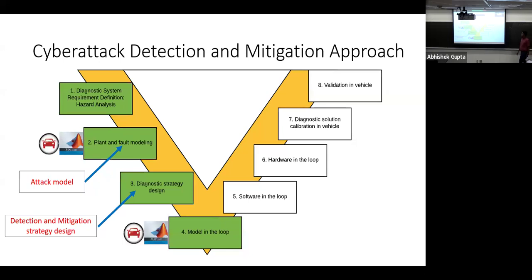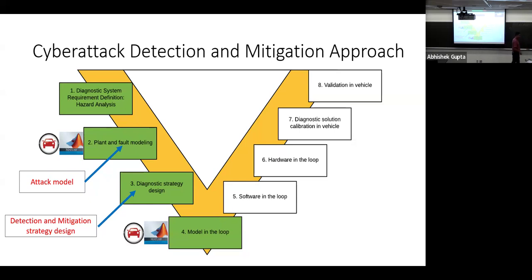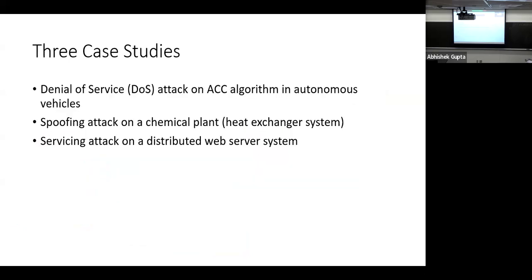When you have a cyber attack, the process doesn't fundamentally change — but in addition to a plant model, you need an attack model. You also need a detection and mitigation strategy. All of that must be designed at the very beginning, when you're designing the vehicle or system. We'll have three case studies as assignments: a denial-of-service attack on an adaptive cruise control algorithm, a spoofing attack on a chemical plant, and a denial-of-service attack on a distributed web server system.